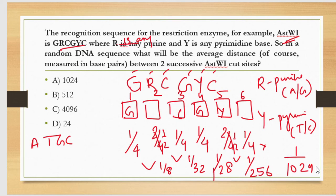Why? Because if they were just asking randomly between two sites what will be the distance, then we can say that among 1024 there will be one site occurring. But they're asking between two successive cut sites. These sequences are present after 1024 base pairs.